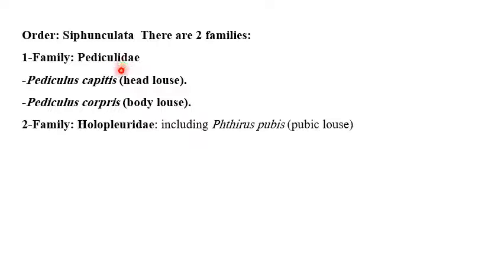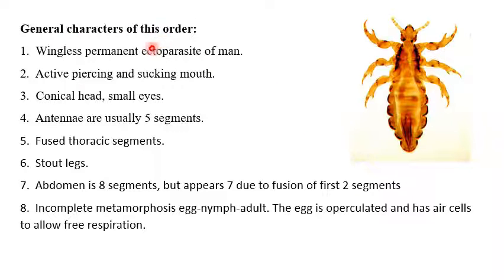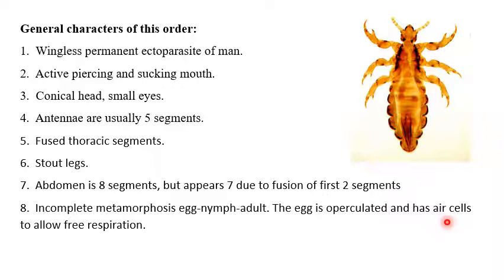Order Phthiraptera includes two families: Family Pediculidae, which includes Pediculus capitis (head louse) and Pediculus corporis (body louse); and Family Phthiridae, which includes Phthirus pubis (pubic louse). Characteristics of the order: wingless, permanent ectoparasite of man, active piercing and sucking mouth parts, conical head, small eyes. Antennae usually five segments. Fused thoracic segments, stout legs. Abdomen is eight segments but appears fewer due to fusion of first two segments. Incomplete metamorphosis: egg, nymph, adult.